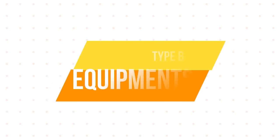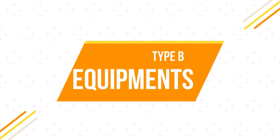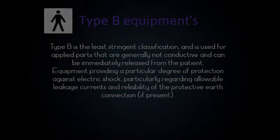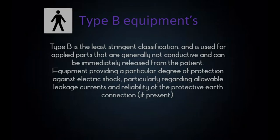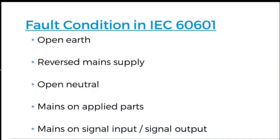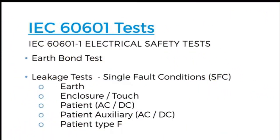Let's begin with Type B Equipment. Type B is the least stringent classification, and is used for applied parts that are generally not conductive and can be immediately released from the patient. It provides a particular degree of protection against electric shock, particularly regarding allowable leakage currents and reliability of the protective earth connection, if present.